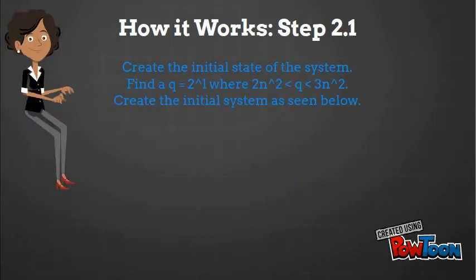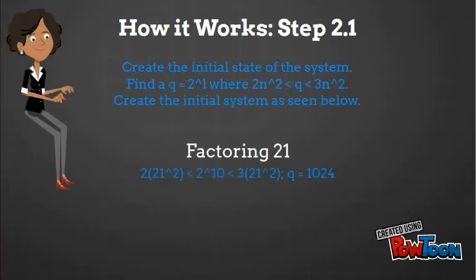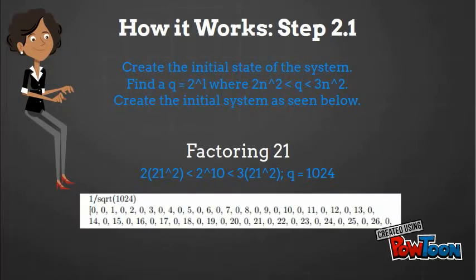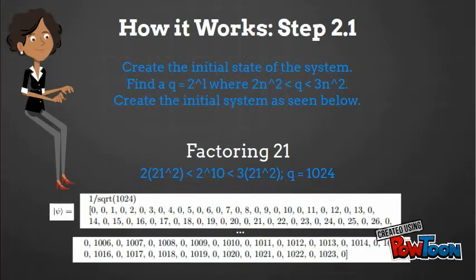First, she creates the initial state of the system. Jackie calculates q, the least power of 2 greater than 2n squared. This q is used to determine how many qubits she will need. For the number 21, q will equal 1024. The initial state will then consist of numbers 0 through 1023 in the first register, each followed by a 0 in the second.